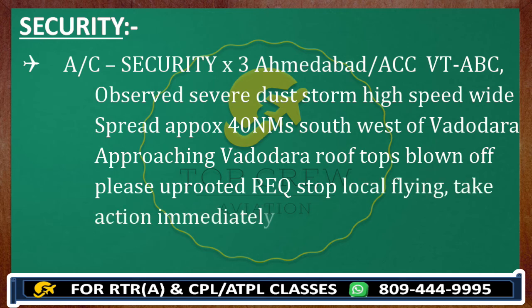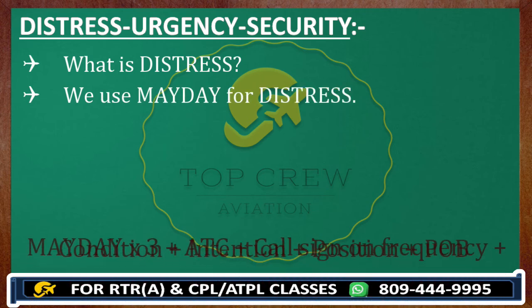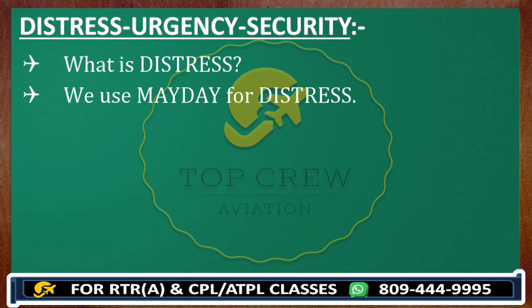That's it for distress, urgency, and security. Quick recap: we all know what is distress — anything which requires immediate assistance comes under distress. For distress we use the term Mayday: Mayday, Mayday, Mayday, then your ATC, then your call sign, on frequency as per the chart. Whatever is your condition — say engine number one caught fire — intention: will force land in the area. Position: whatever it is. You must mention persons on board at the end, and type of aircraft at the beginning.